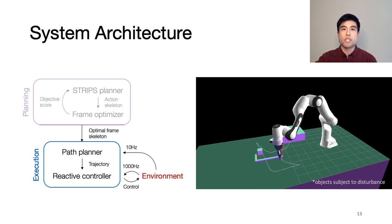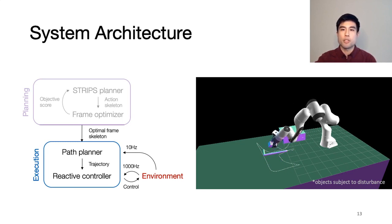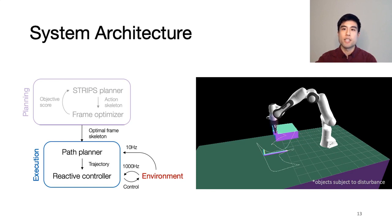Above reactive controllers is a path planner that operates at a slower frequency and handles things that reactive controllers may have trouble with, such as obstacle avoidance.